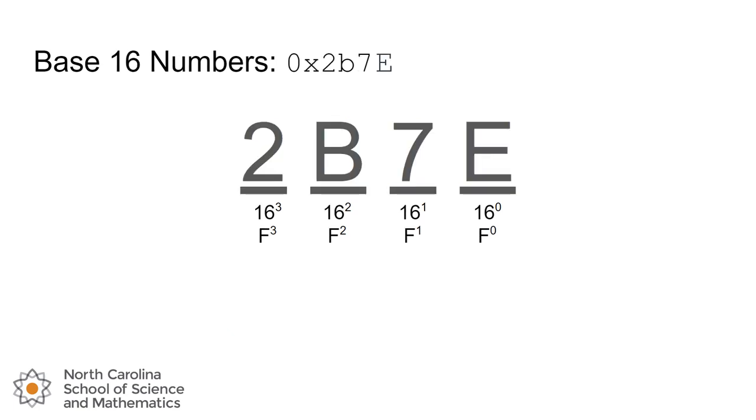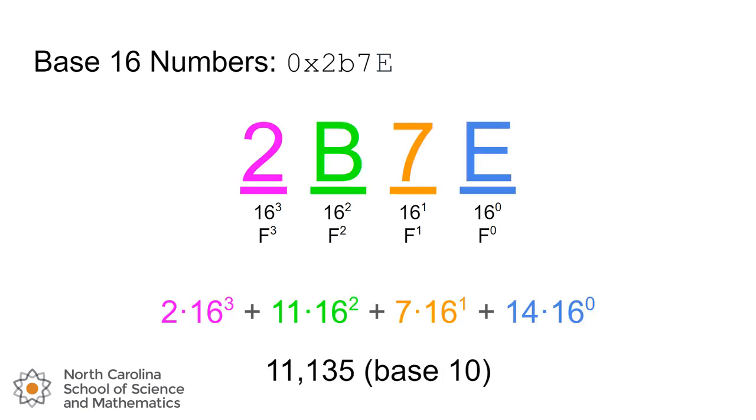We can do the same thing with hexadecimal. As a reminder, B is basically equivalent to the number 11, whereas E is equivalent to the number 14. So we're going to convert these to decimal. The number 2 tells us we have 2 groups of 16 cubed. B tells us we have 11 groups of 16 squared. 7 tells us we have 7 groups of 16 to the 1. And E tells us we've got 14 groups of 16 to the 0. So we can just throw that into a calculator, and we'll crunch out the number 11,135. So again, it's the same number, just two different ways to write it. 2B7E hexadecimal, 11,135 base 10.